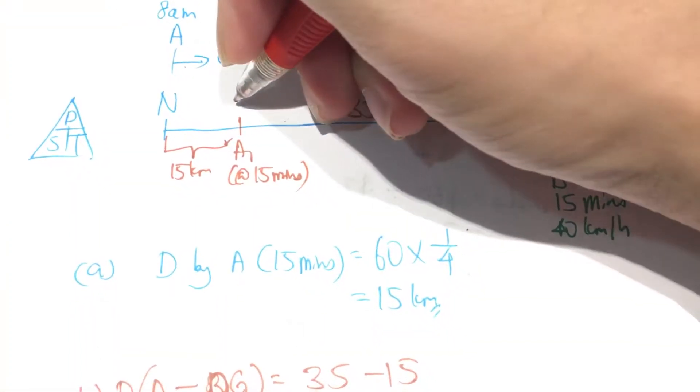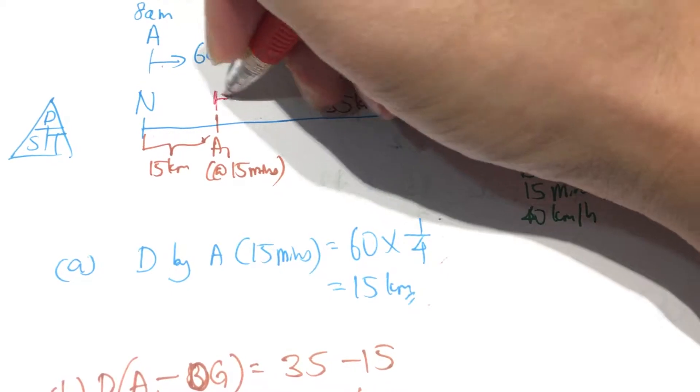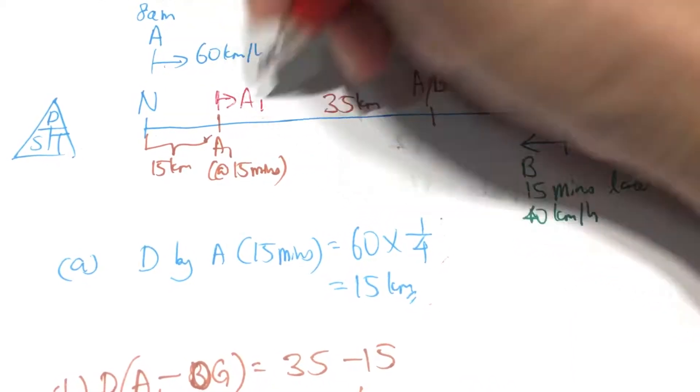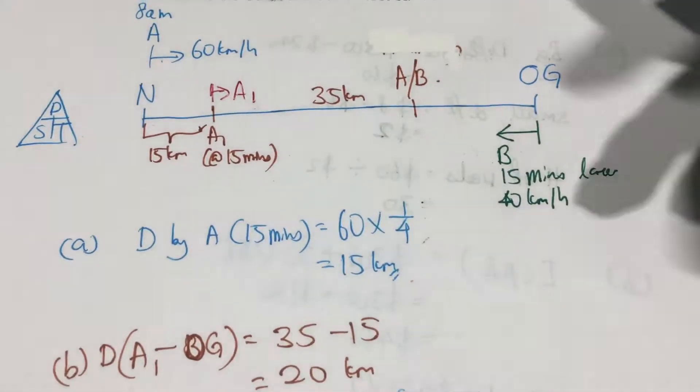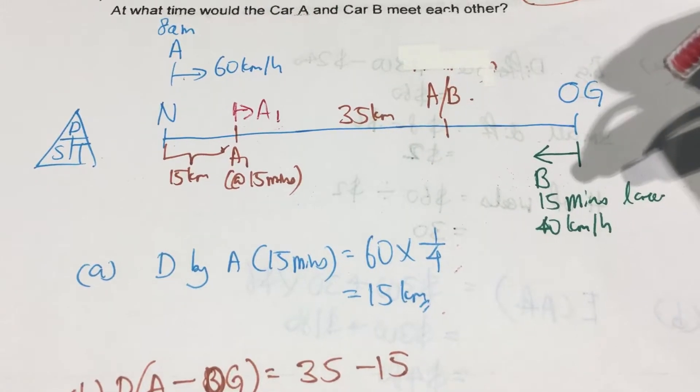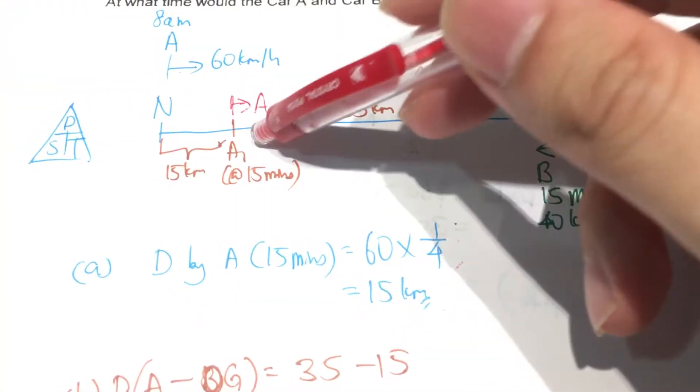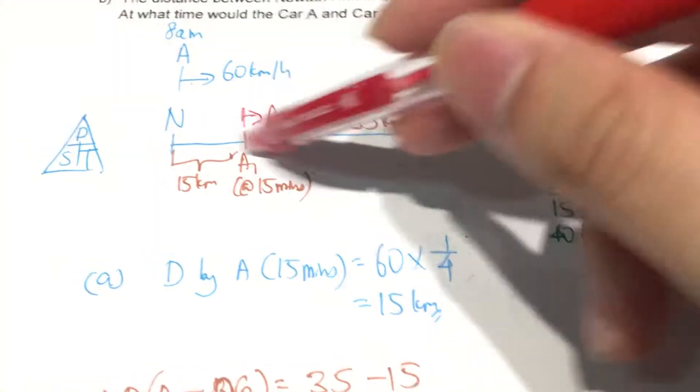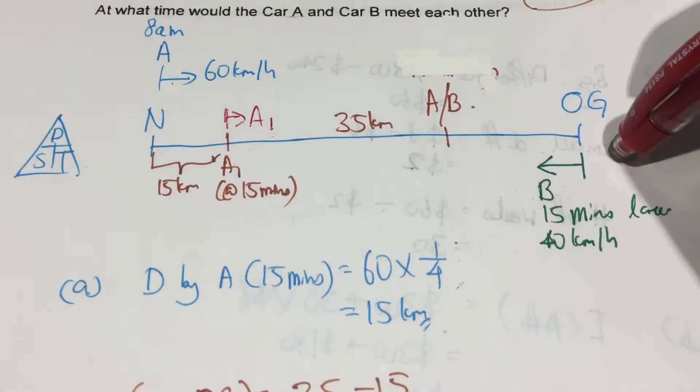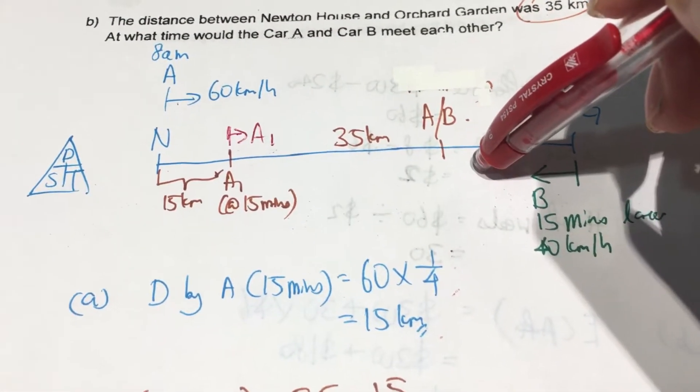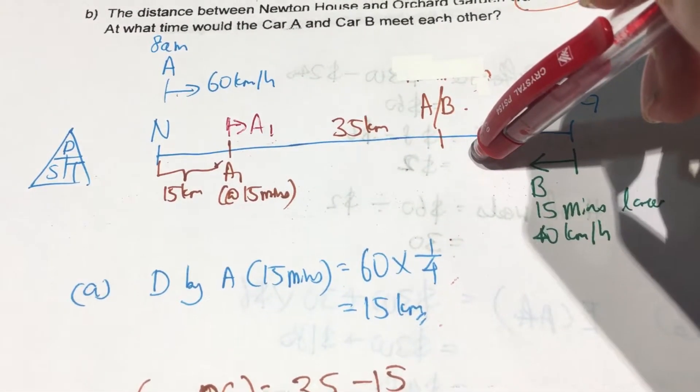So there will be this point that car A has already come here. So meaning that at every single point in time, car A is always moving from here to here, and car B is moving from here to here. So let's imagine like this, which is...